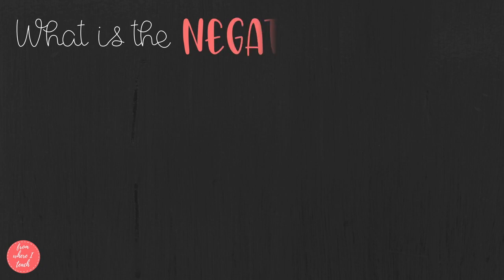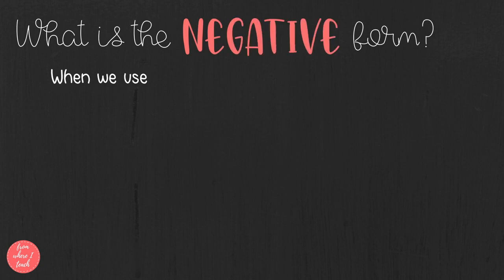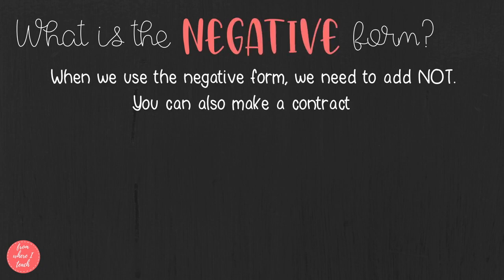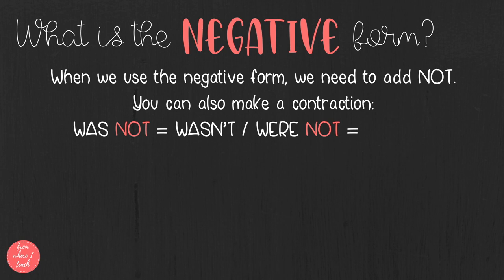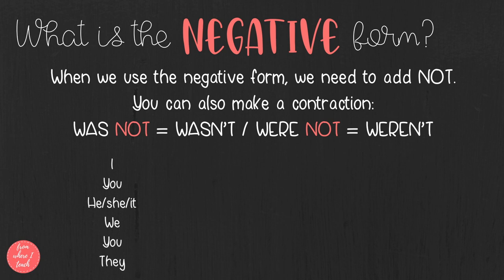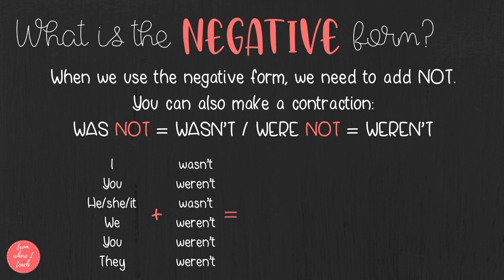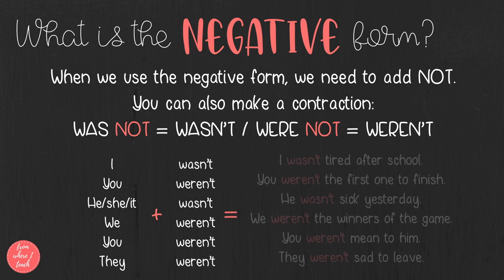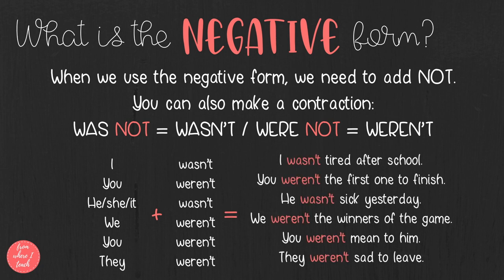To make the negative form of the verb to be, we need to add not. You can also make a contraction: was not becomes wasn't, and were not becomes weren't. For example: I wasn't tired after school. We weren't the winners of the game.